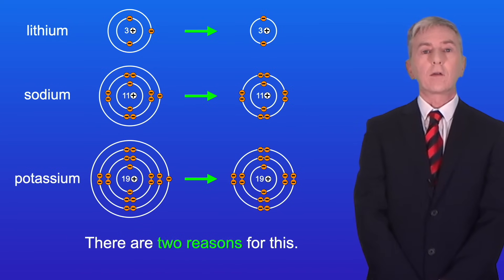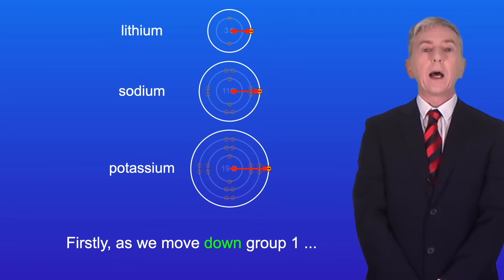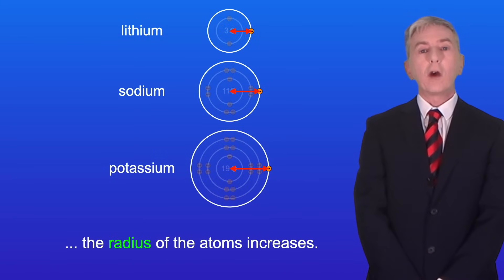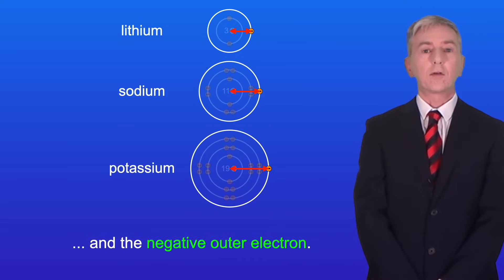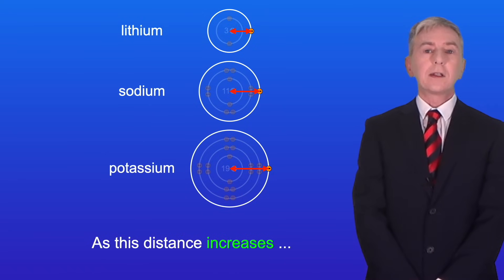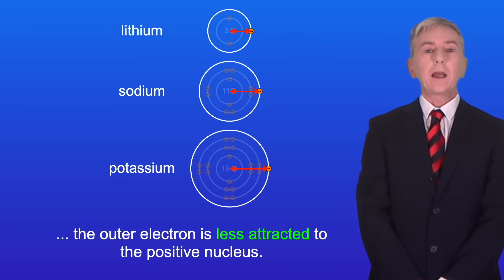Now there are two reasons for this. Firstly, as we move down group 1, the radius of the atoms increases. That means there's a greater distance between the positive nucleus and the negative outer electron. And as this distance increases, the outer electron is less attracted to the positive nucleus.